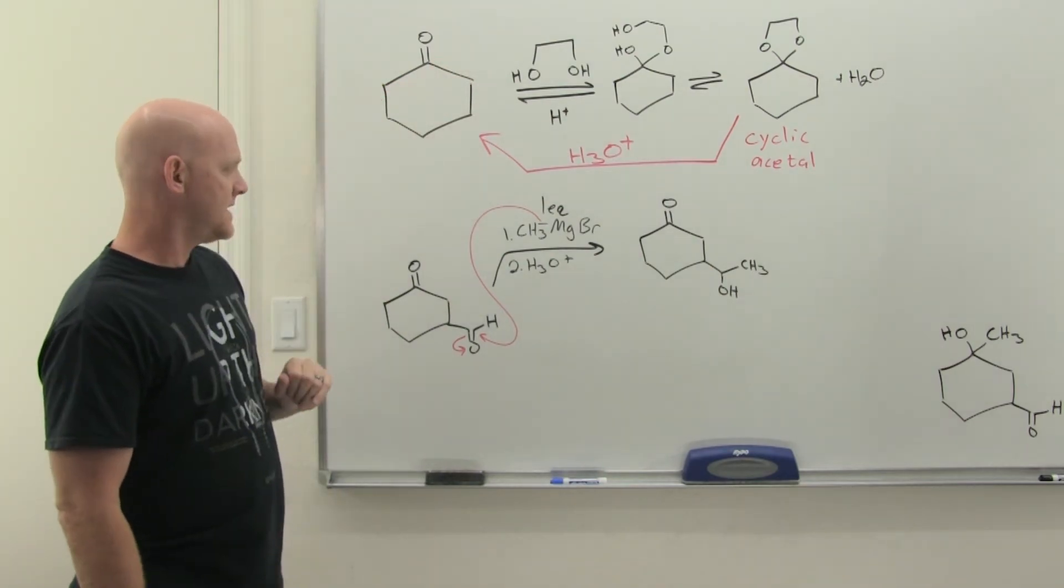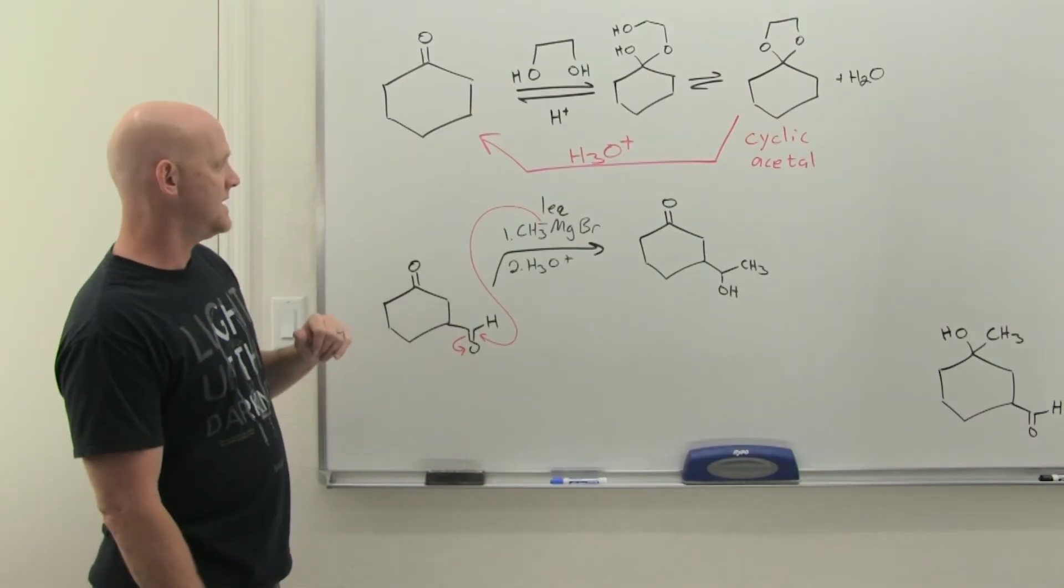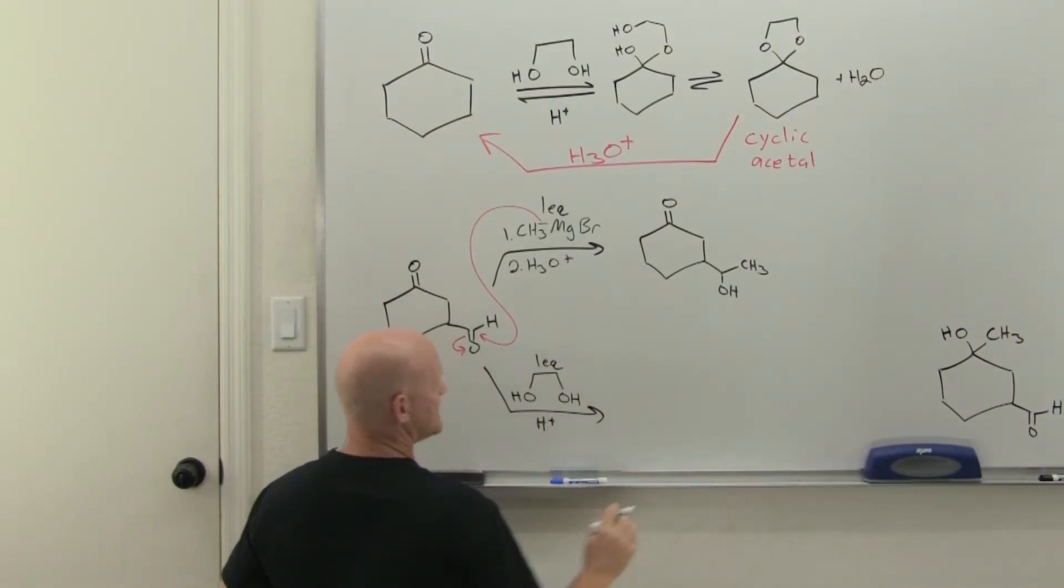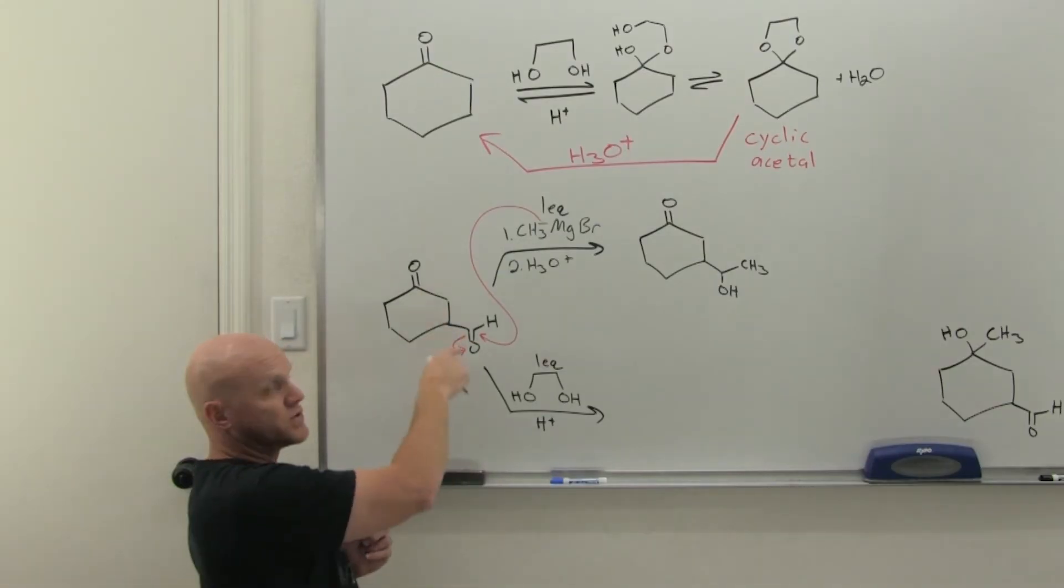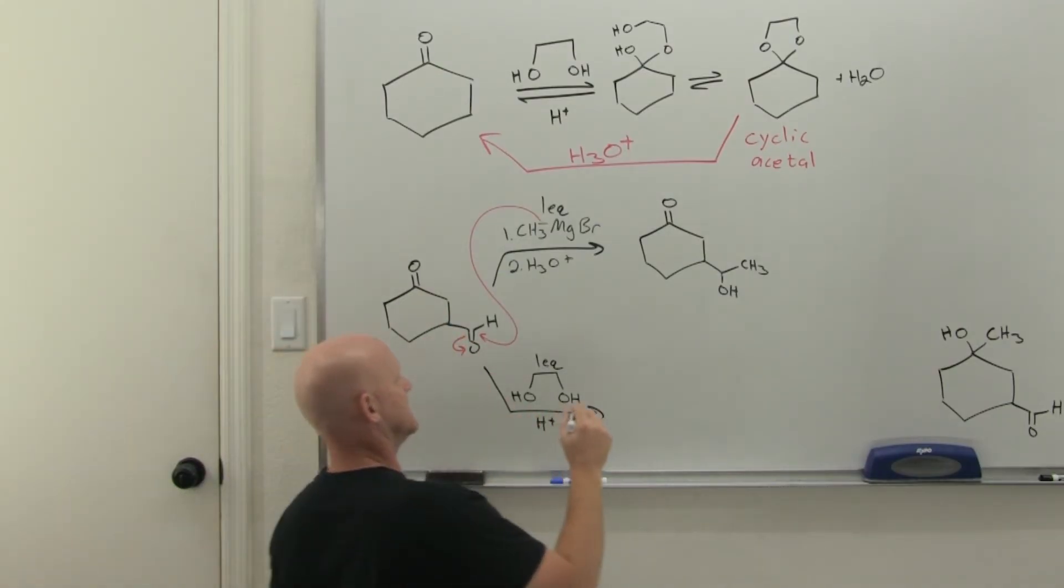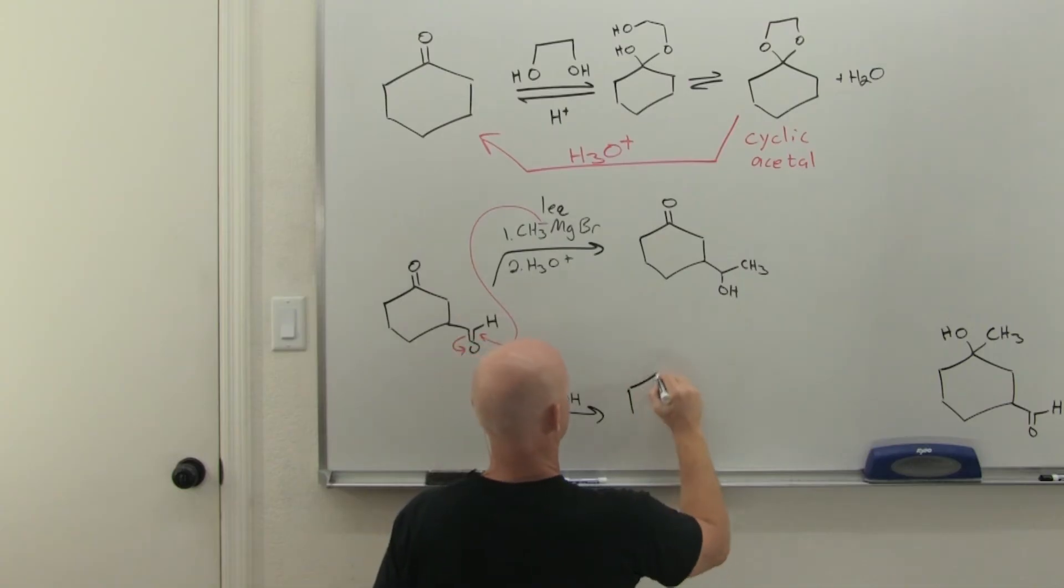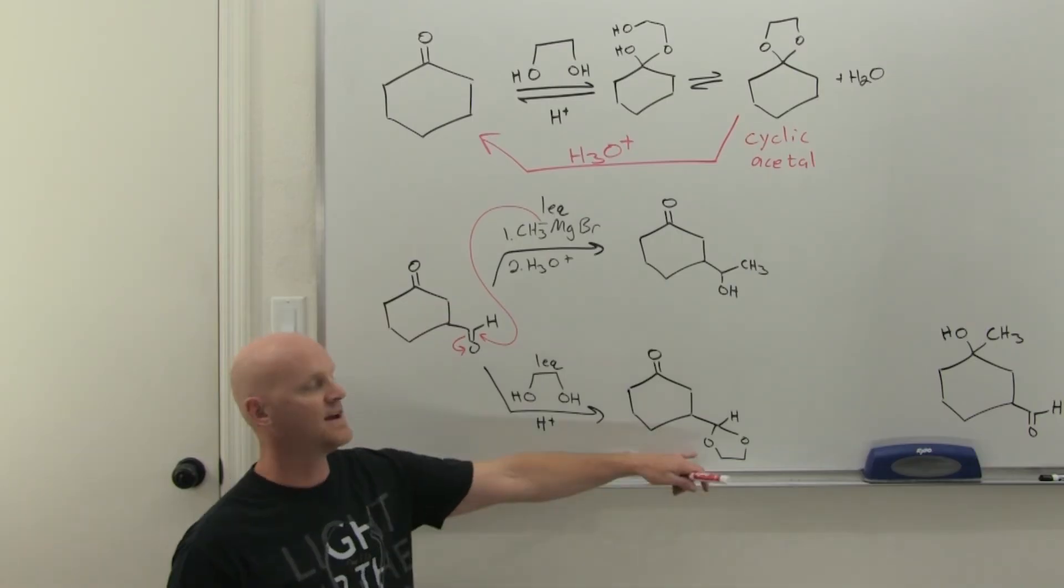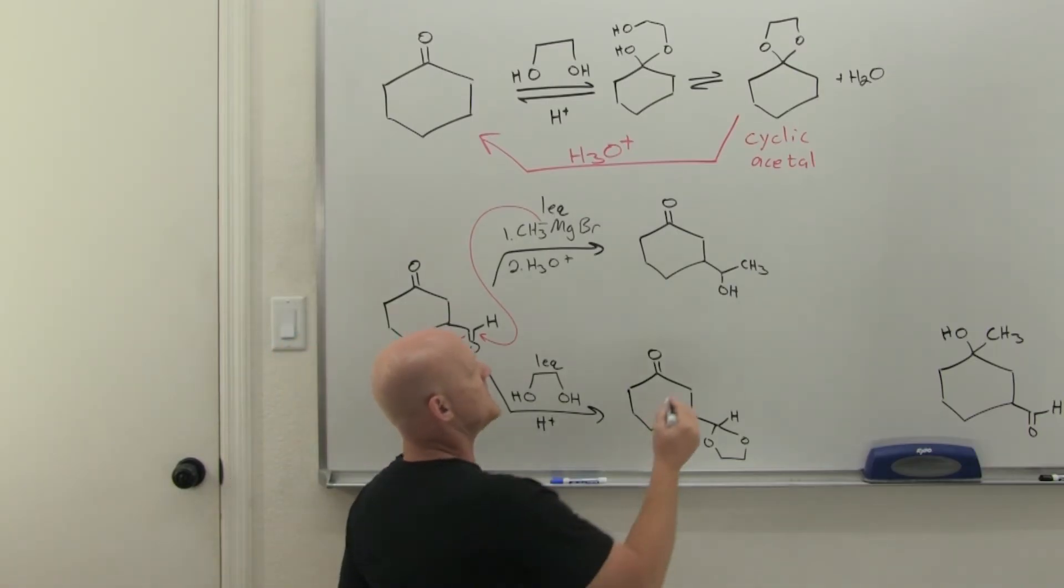What you want to do is first protect the more reactive group, in this case, the aldehyde. And so what we'll do is before we add the Grignard, we will add one equivalent of our ethylene glycol with acid catalyst. And since we're only adding one equivalent, it's only going to get to protect one of these two groups, whichever one's more reactive, in this case, the aldehyde. And so as a result, ketone's still there, but our aldehyde is now protected from nucleophilic attack as part of that cyclic acetal.